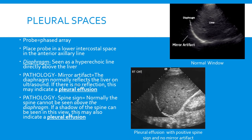To finish off the pulmonary exam we're going to take a look at the pleural spaces. For this exam we need to grab the phased array probe because we're going to be looking a little bit deeper. We'll take the probe and place it in a lower intercostal space along the anterior axillary line, and we should get a picture similar to the one on the top right.